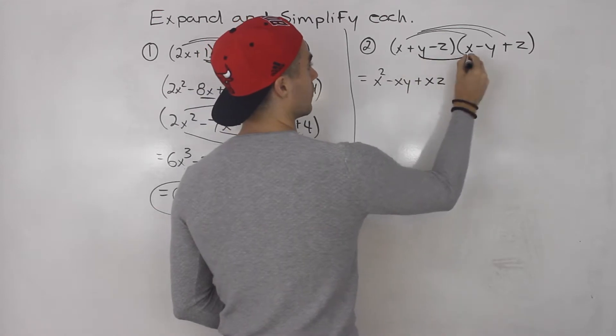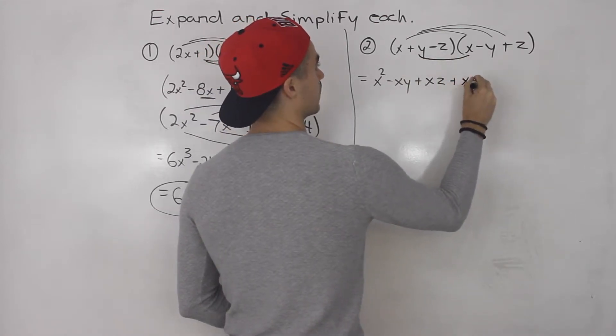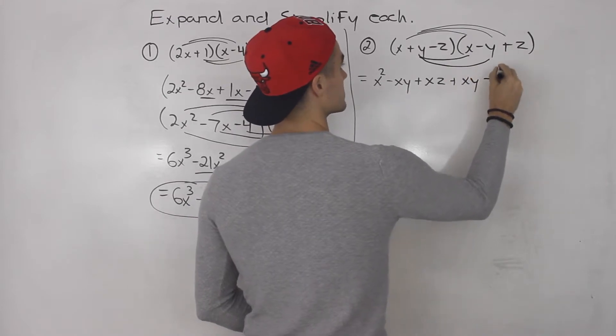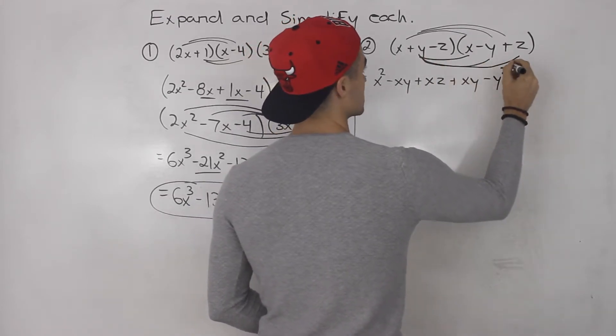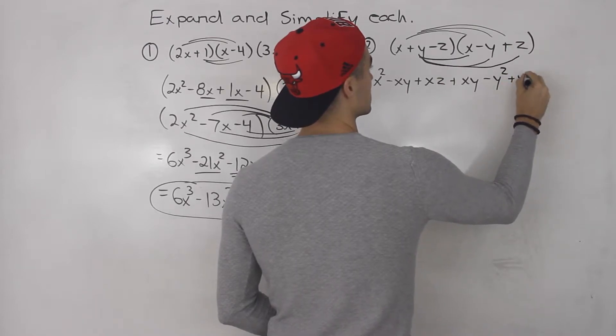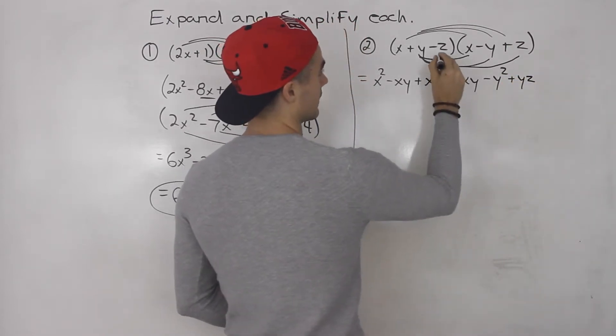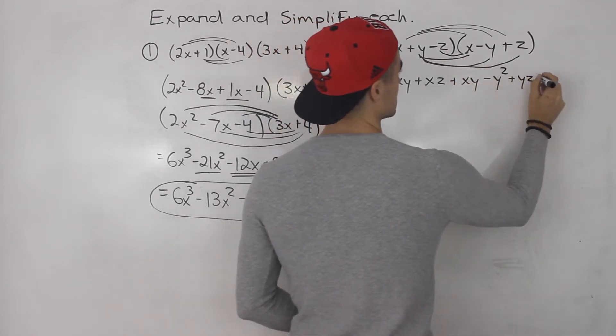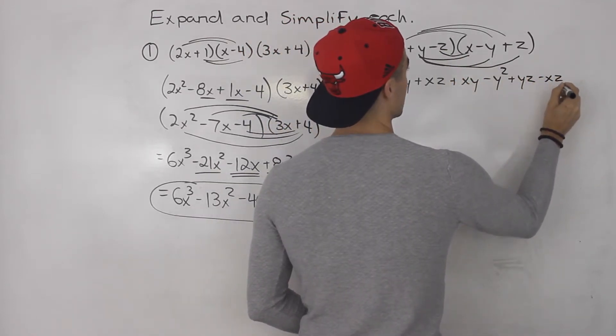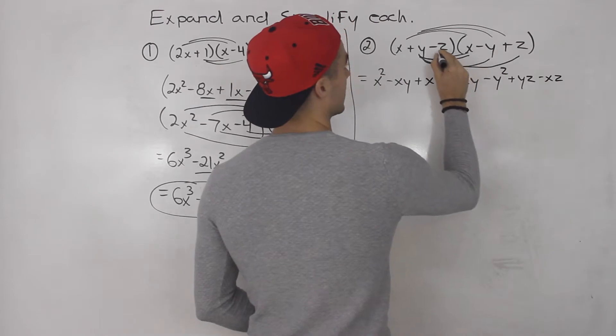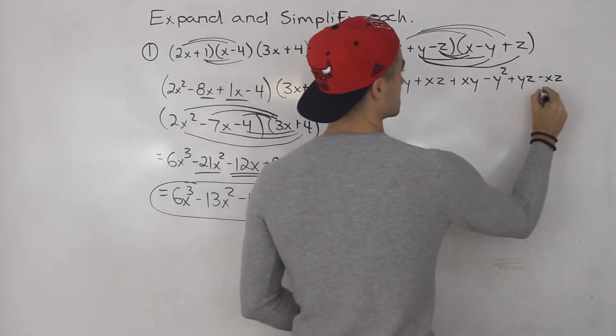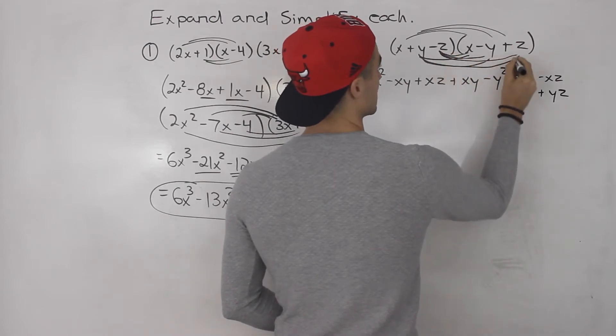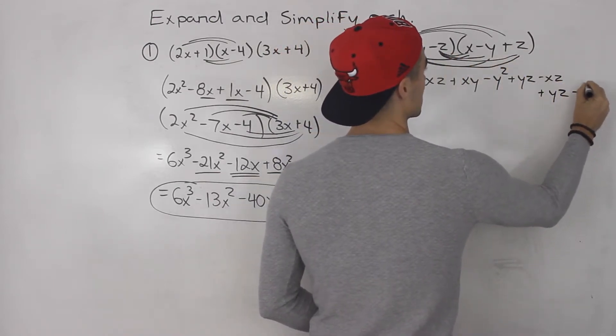And here, y times x is xy. Y times negative y is minus y squared. And then y times z is positive yz. And then this remaining minus z here. So minus z times x gives us negative xz. Minus z times negative y would give us positive yz. And then negative z times positive z would give us negative z squared.